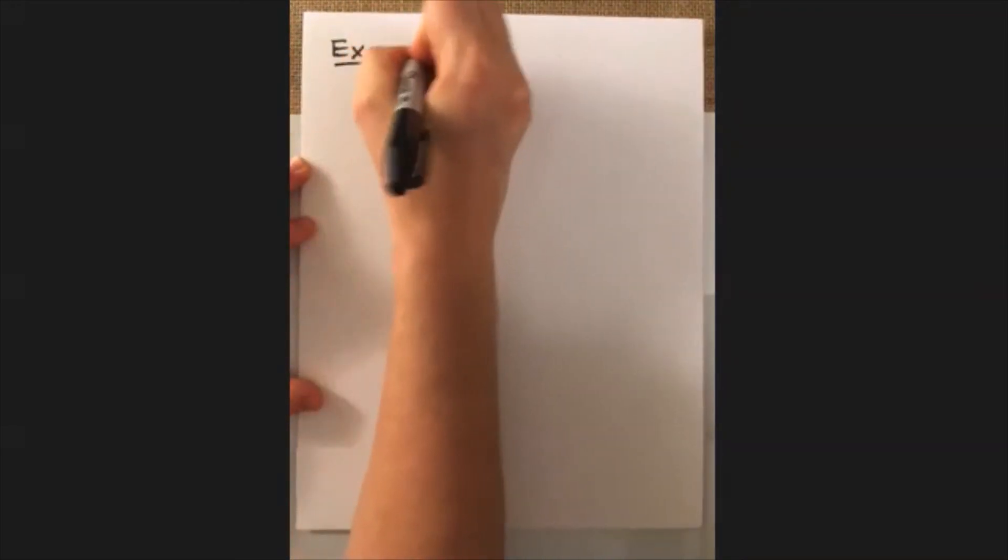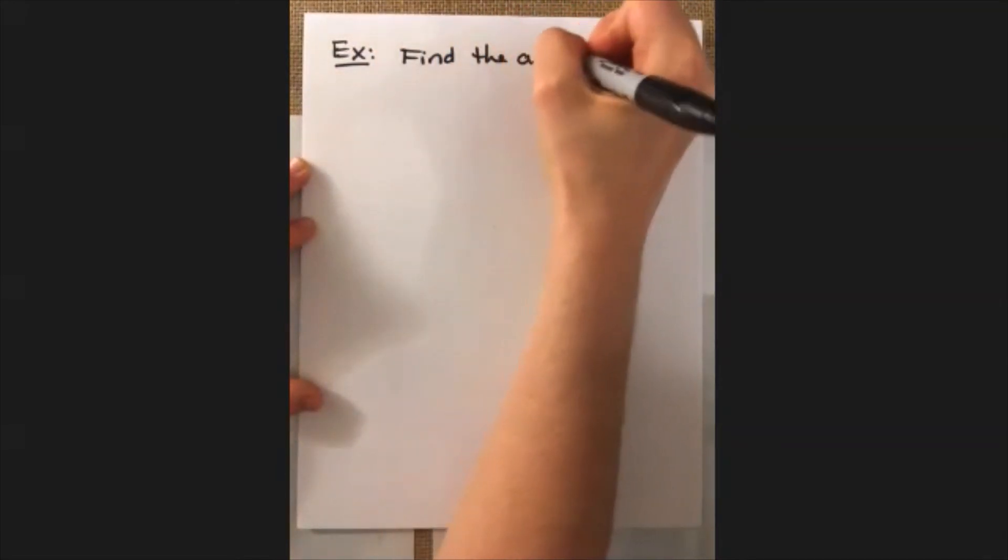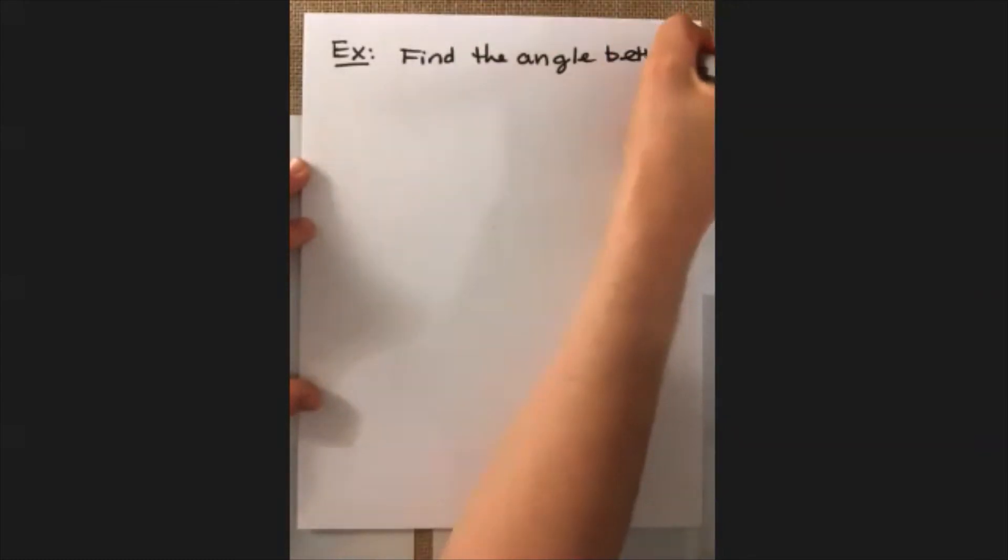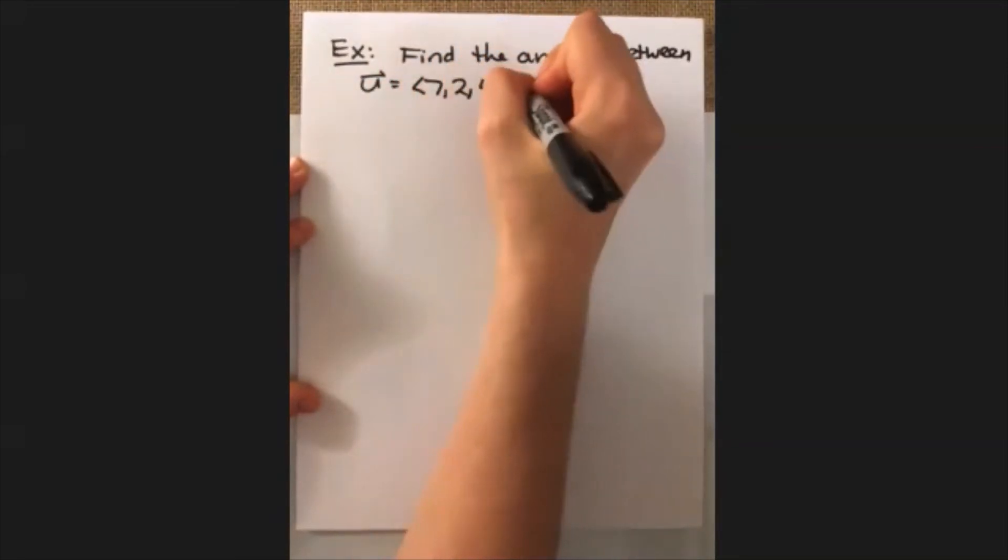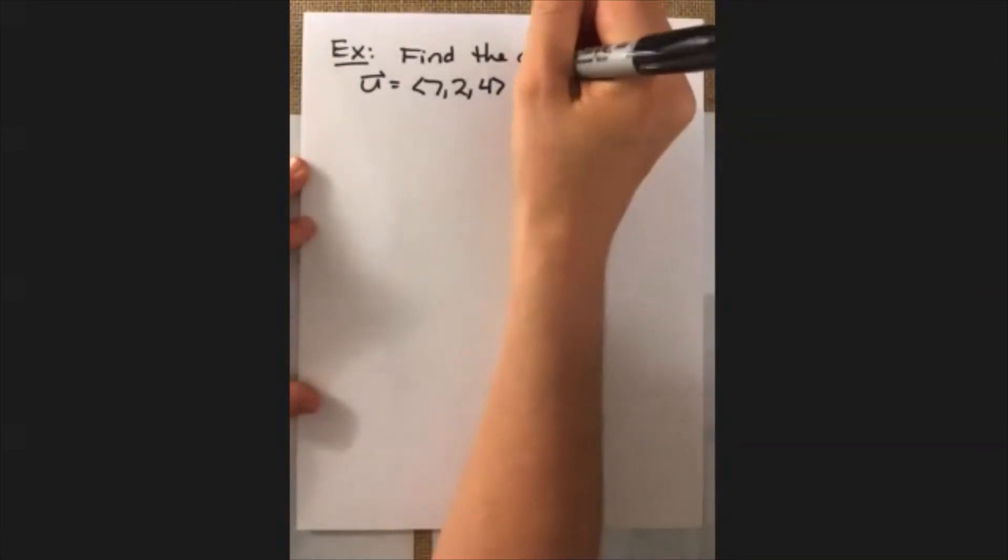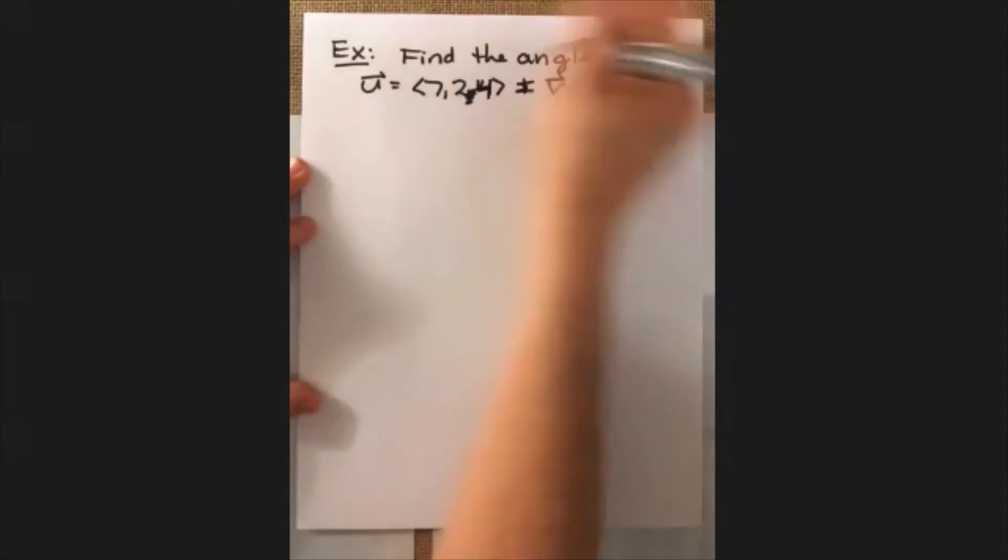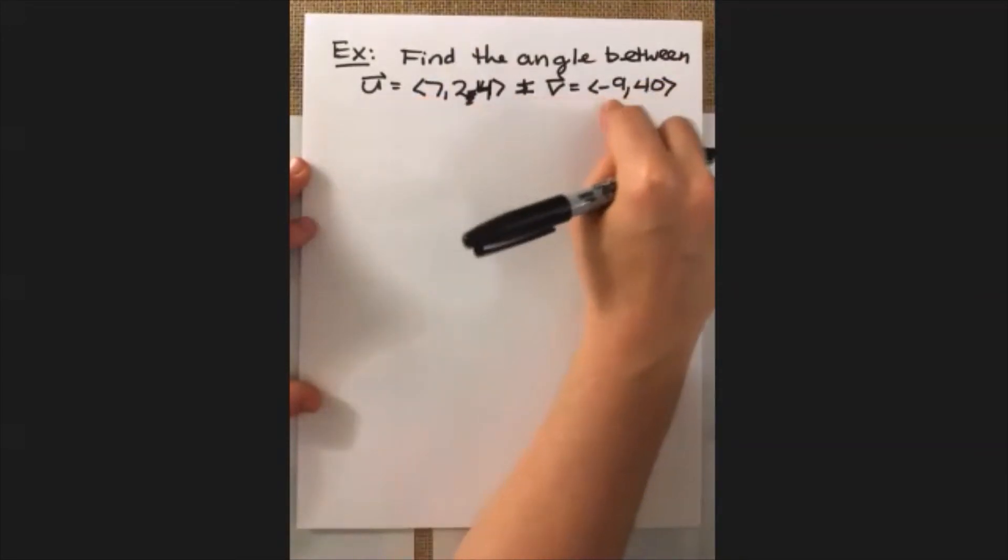We're also able to use that equation to find the angle between vectors. Let's do an example of that. That is actually a 24. 7, 24 and -9, 40.